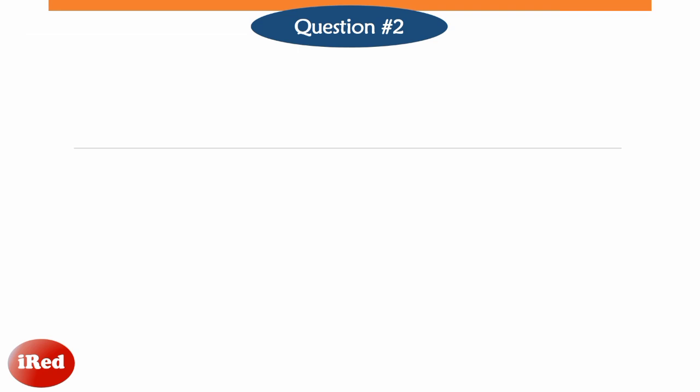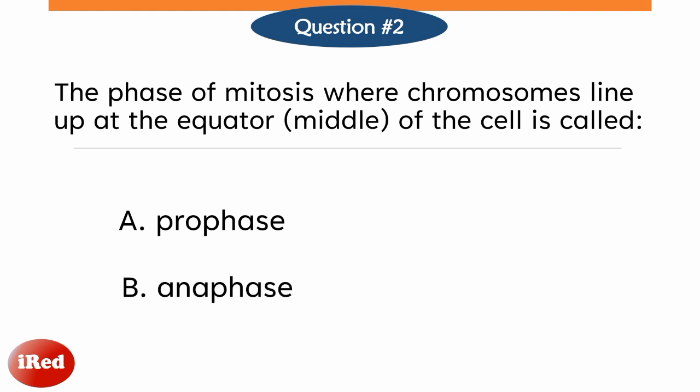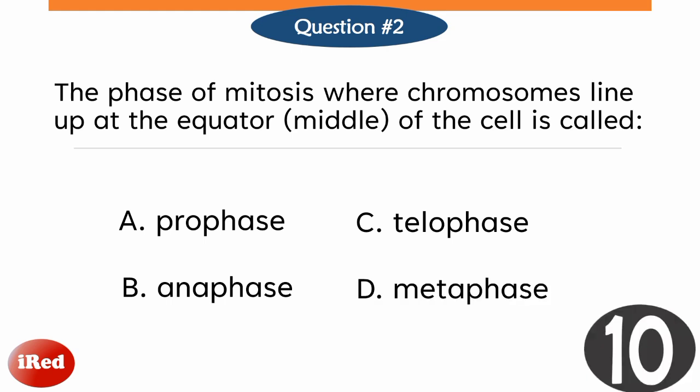Question number two. The phase of mitosis where chromosomes line up at the equator of the cell is called: letter A, prophase; letter B, anaphase; letter C, telophase; or letter D, metaphase.